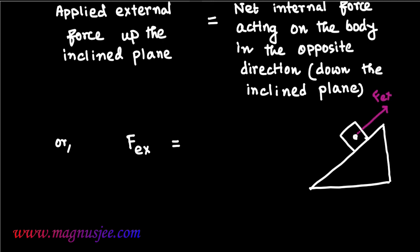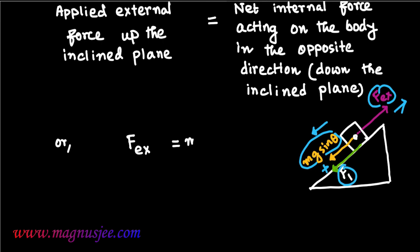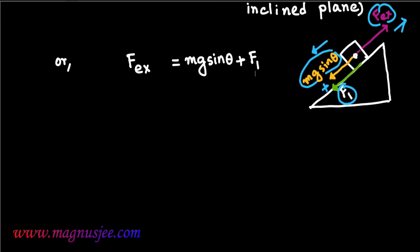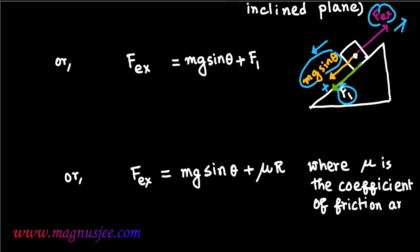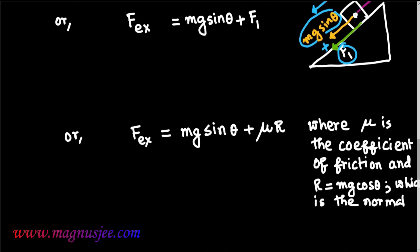The body is placed on the inclined plane with external force Fex acting up it. Since mg sin theta and limiting friction FL both act down the inclined plane, Fex equals mg sin theta plus FL. Substituting FL equals mu times R, and since R equals mg cos theta, we get Fex equals mg sin theta plus mu times mg cos theta, where mu is the coefficient of static friction.